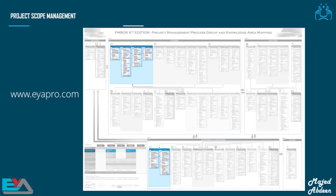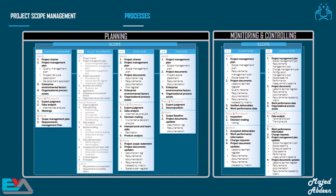Here is our mapping diagram again. Remember to download this from our website eappro.com. You can see the Scope Management processes, which are colored blue. The Scope Management processes are the first processes in the Planning process group, and they are also the first two processes in the Monitoring and Controlling process group. Don't be terrified looking at this — I will explain everything involved in these processes, and you will find them easy to understand.